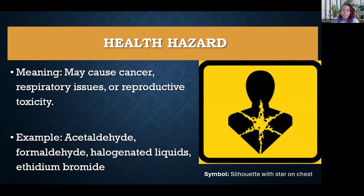Health hazards — you can see a picture of a person with something radiating across the chest area. This means that the substances there could cause cancer, respiratory issues, or reproductive issues. You don't want any of those, so keep away when you see this silhouette. Examples include acetaldehyde, formaldehyde, halogenated liquids, and ethidium bromide.